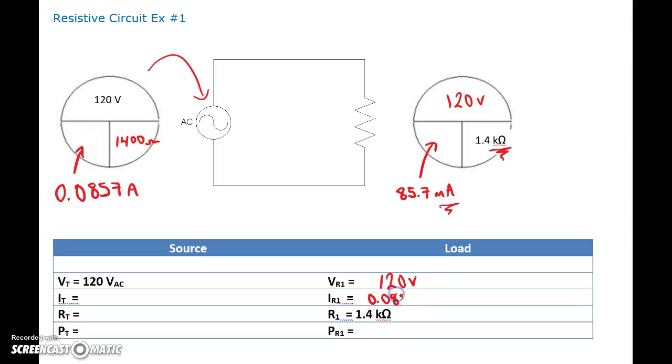And then the power, well it's just voltage times current. So in that case we've got 120 times 0.0857, and that gives you a whopping 10.28 watts.